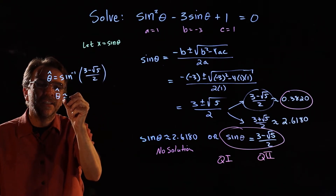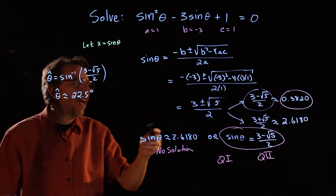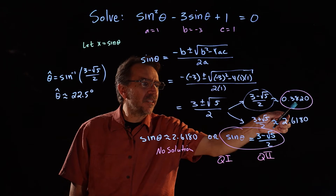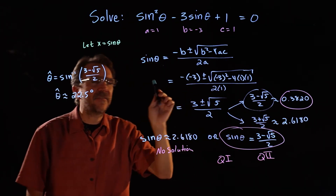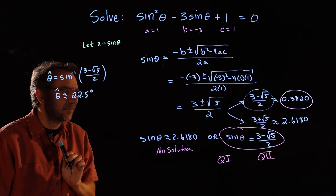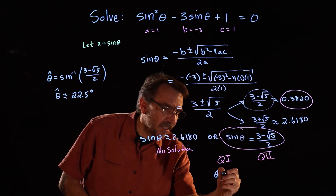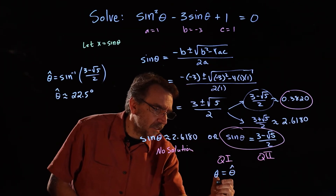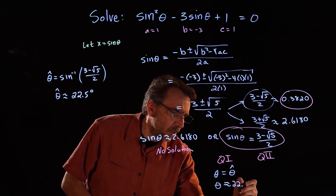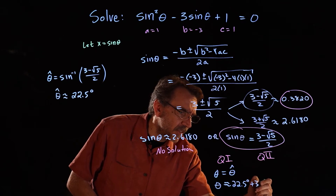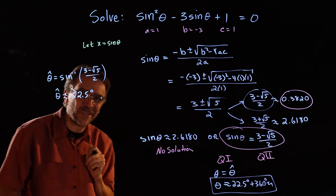On a calculator, that gives approximately 22.5 degrees. Note that using the exact value on the sine inverse is more accurate than using the rounded approximation. Going back: in quadrant 1, theta equals the reference angle, so the answer is approximately 22.5 degrees plus 360n, where n is an integer — giving all solutions coterminal in Q1.